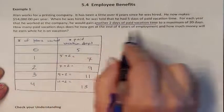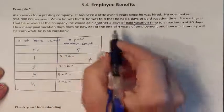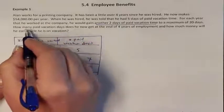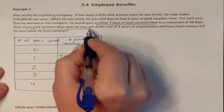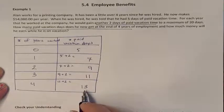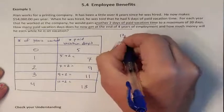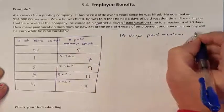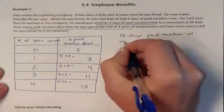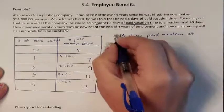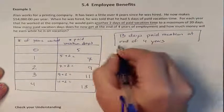The problem had two questions. The first question was: how many paid vacation days does he have at the end of 4 years? He has 13 days. That is the answer to question number 1.